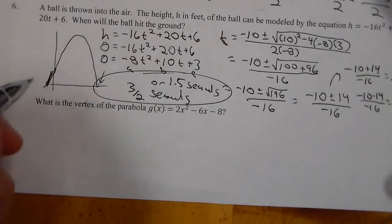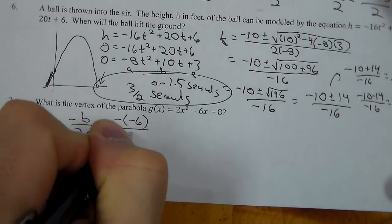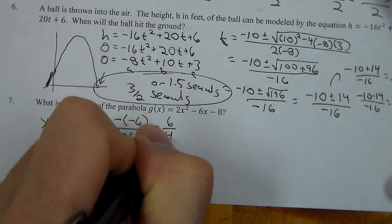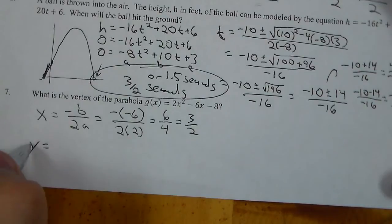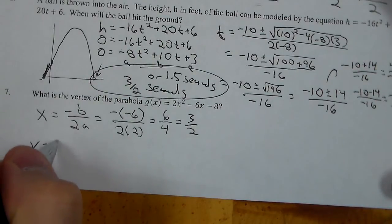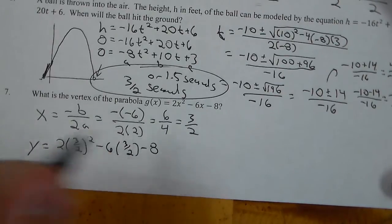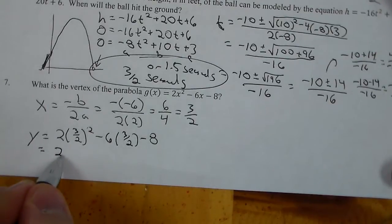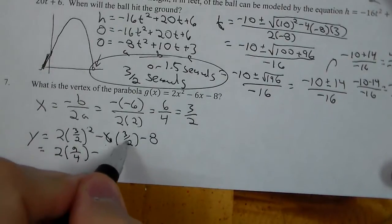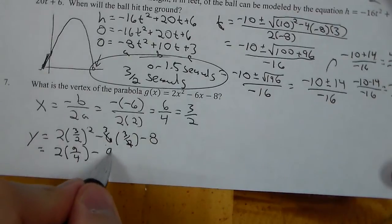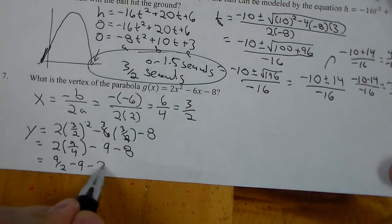For number 7, we need to find the vertex. We're going to use x equals negative b over 2a. That's negative negative 6 over 2 times 2, which gives us 6 over 4, or 3 over 2 — so that is the x value. We're now going to plug that into the function to get our y value. That's 2 times 3 over 2 squared minus 6 times 3 over 2 minus 8. 3 over 2 squared becomes 9 fourths. Then 6 times 3 over 2 — reducing gives us 9.